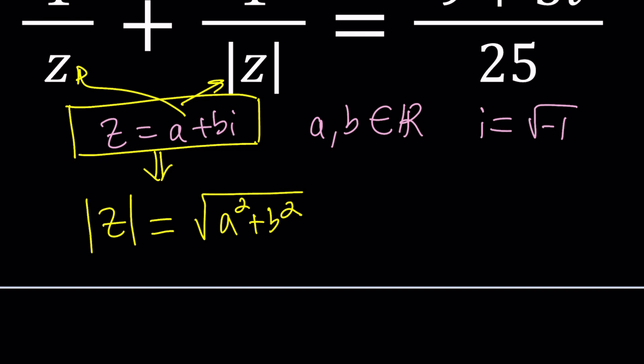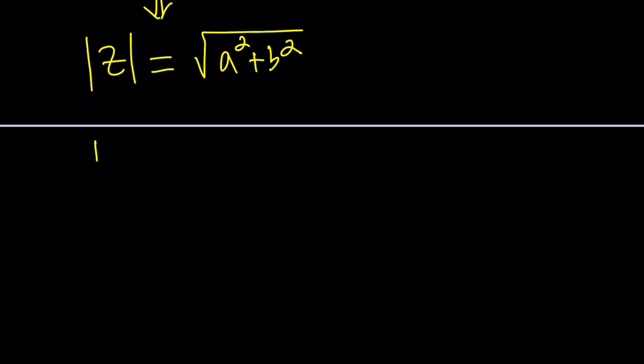We're going to substitute everything. So 1 over z is going to be 1 over A plus B I and then 1 over absolute value is going to be 1 over the square root of A squared plus B squared. By the way there's something called the complex conjugate. If z is equal to A plus B I then z bar is called A minus B I.